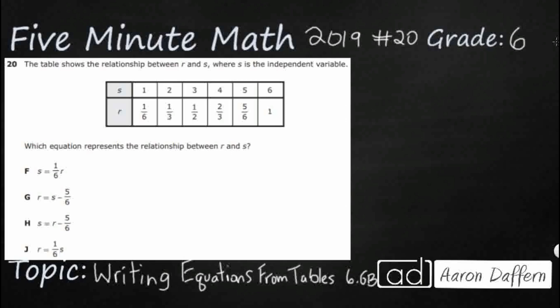So we have a table here and we already have a clue that s is our independent variable. So our independent variable, that's where we are going to start from. So something is done to this independent variable, which means this r right here, if s is the independent variable, this is going to be our dependent variable.